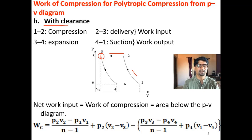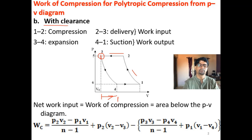When this is the case, the compressed air occupying that space expands first when the piston starts moving from TDC. So there is expansion of this compressed air only, with a drop in pressure. Then actual suction takes place from 4 to 1. This is the end of the stroke.